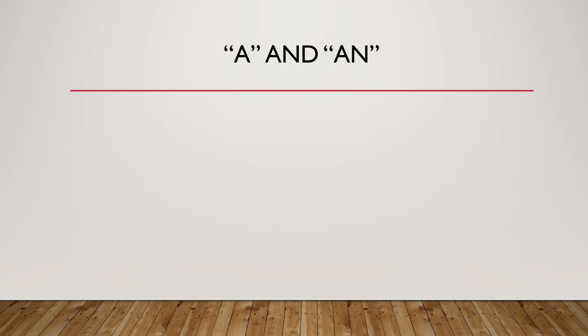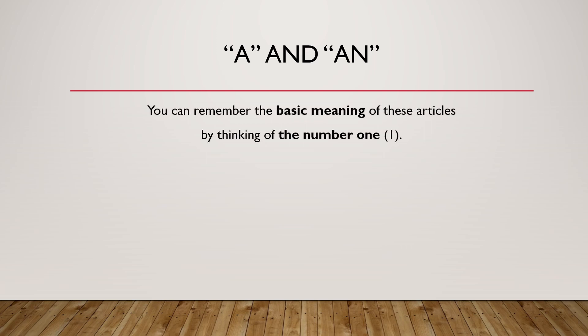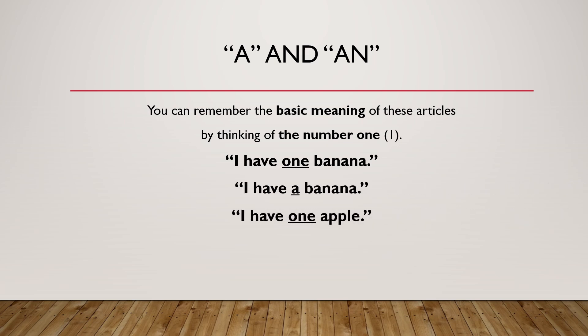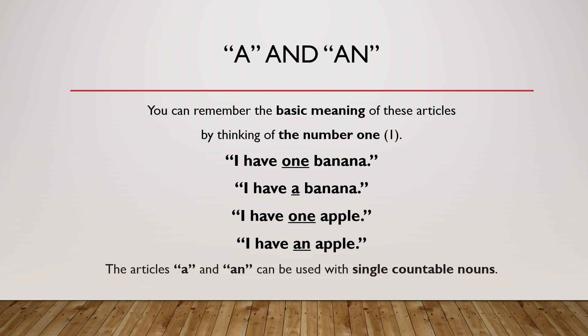A and an. You can remember the basic meaning of these articles by thinking of the number one. I have one banana — I have a banana. I have one apple — I have an apple. Basically, a and an mean single. The articles a and an can be used with single countable nouns.